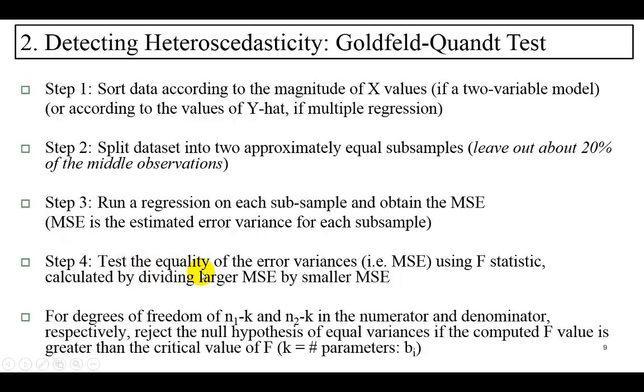And then, we're going to test the equality of the two error variances by dividing the larger mean square error by the smaller mean square error. Of course, if there is no heteroscedasticity...